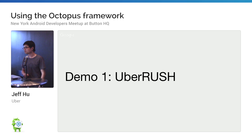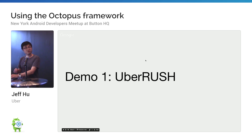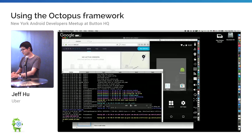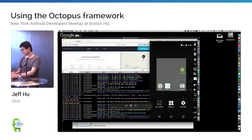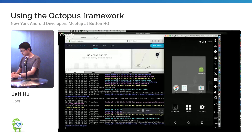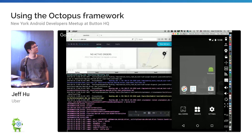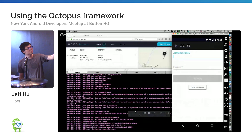Before I dive deep into detail about how Octopus works, I want to give some demos first to show how it works. The first one is Uber Rush. I made a recording — I cheated a little bit. So this is a simulator, this is the side making requests, this is our driver app, and this is a merchant dashboard. You can actually see the change.